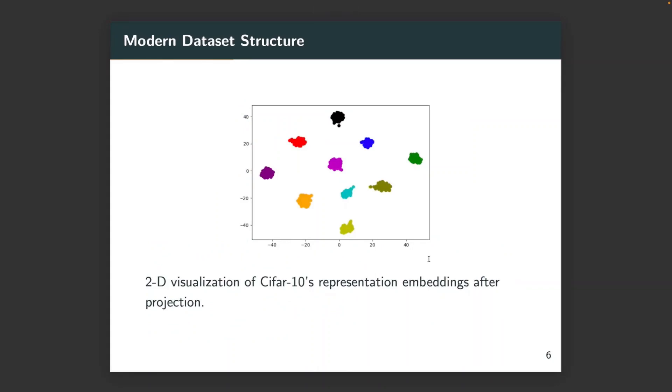As a more direct visualization, here is the 2D visualization of CIFAR-10 representation embedding after projection. Notice that the pre-trained models are very widely used in transfer learning. Thus, one can think in many applications the input data truly has a low-dimensional structure.